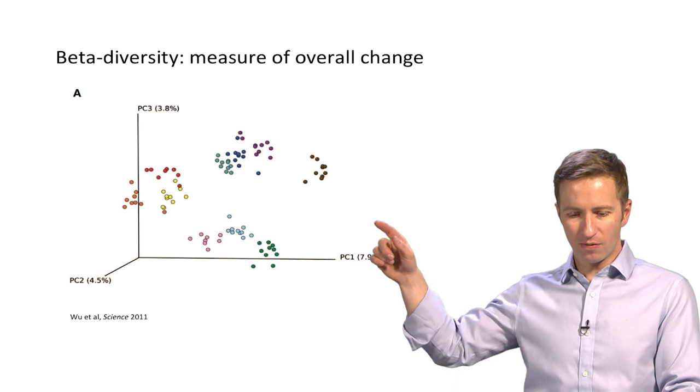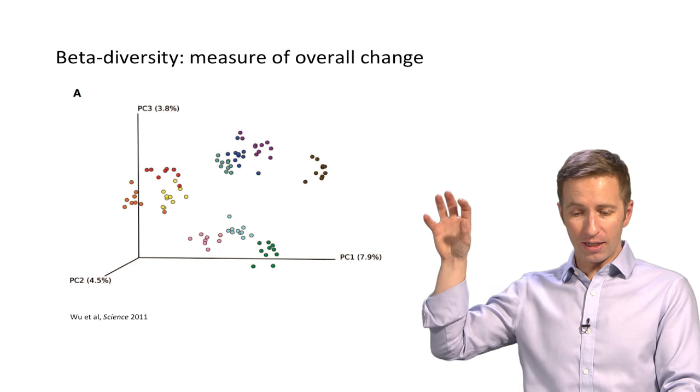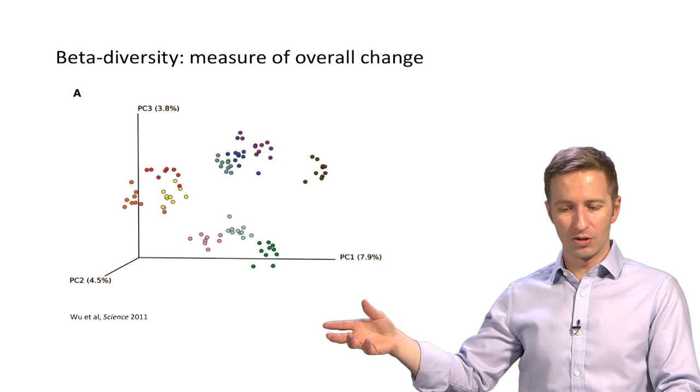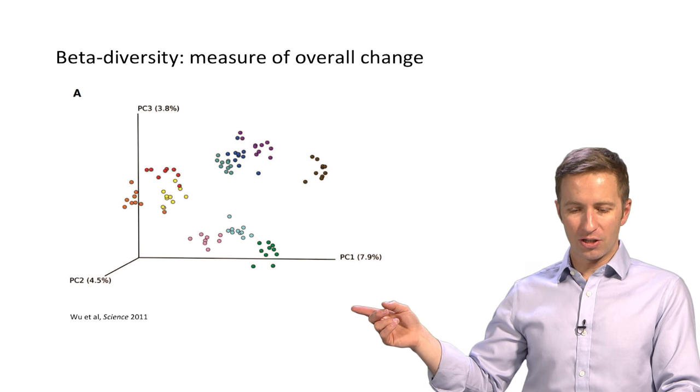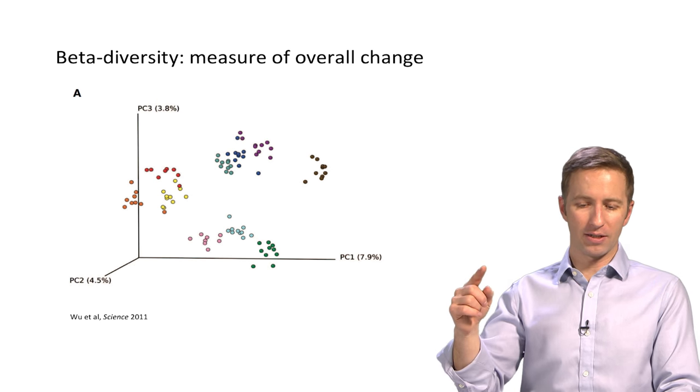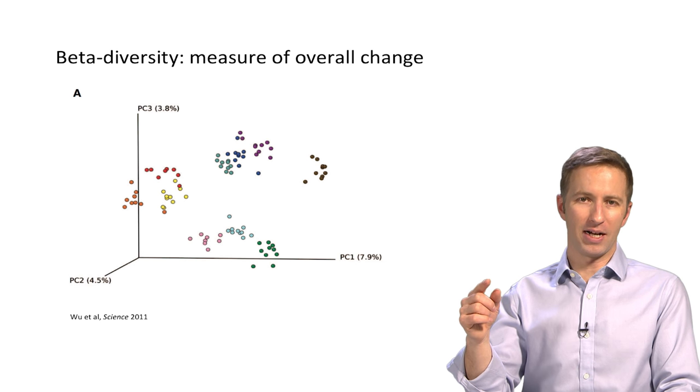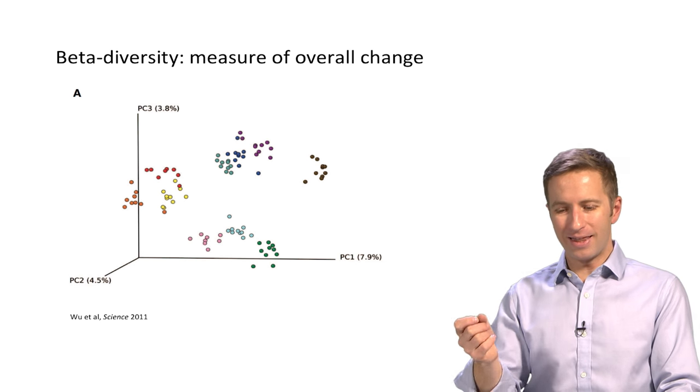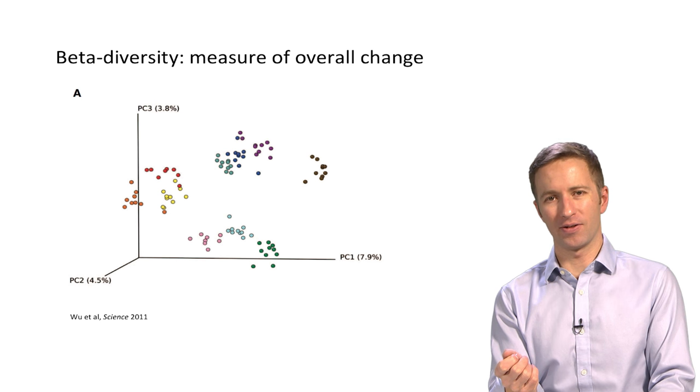If you look at each of the subjects clusters, first of all, each subject has a different microbiome, which is normal. But if you look at each of the clusters, there's one point that tends to be an outlier in a lot of them, and that's the initial time point before the dietary intervention.